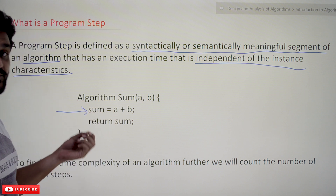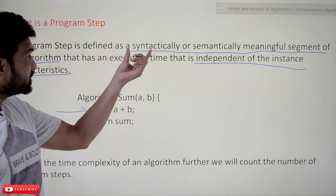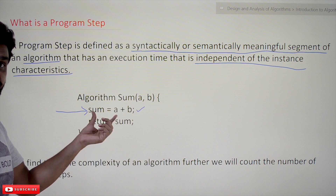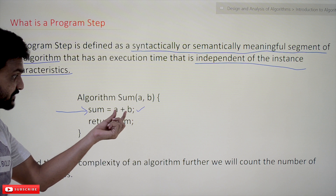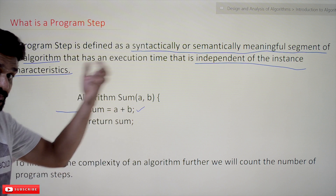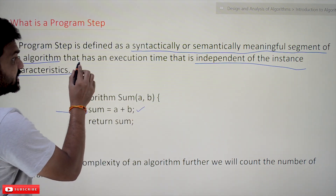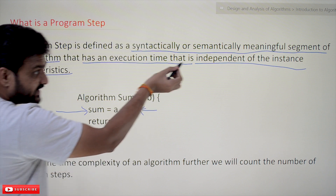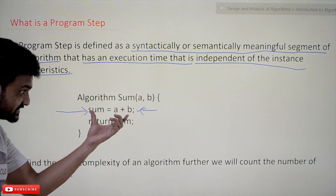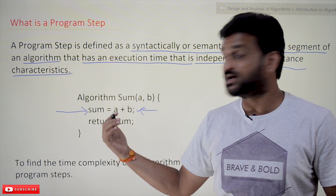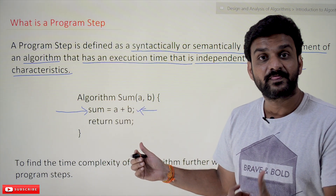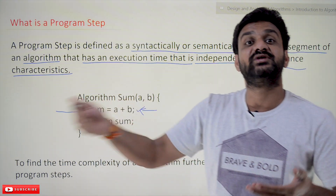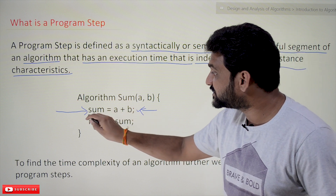For example, take this line of code: `a = b`. Can we call this a program step? Let's check the definition. Is it a syntactically or semantically meaningful statement? Yes, it is — it states that the value of `a` is being stored in `b`. And does it have an execution time independent of instance characteristics? Yes, we are not considering any internal steps for its execution. So this line of code is what we call a program step.